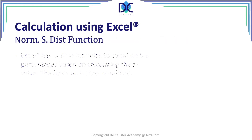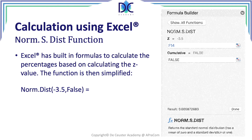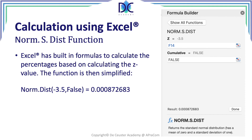Now we look at the NORM.S.DIST function. Here we use the Z value — we have to calculate the Z value. The formula is simpler; we only have Z and true/false. In the formula builder, for Z I reference cell F14, which contains the Z value equal to minus 3.5. With false selected, we see the result: 0.000872. With the cumulative parameter set to true, we find the probability of values to the left of Z = −3.5, which is a very small number: 0.00023.